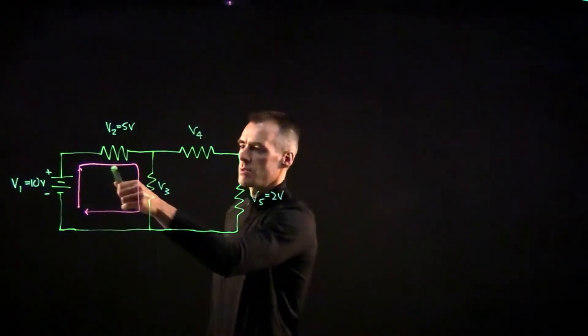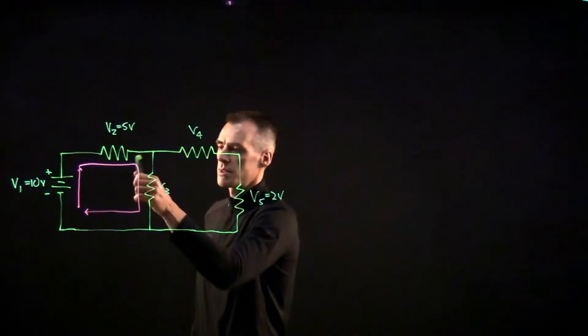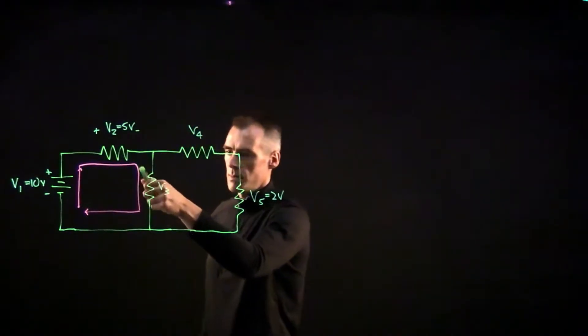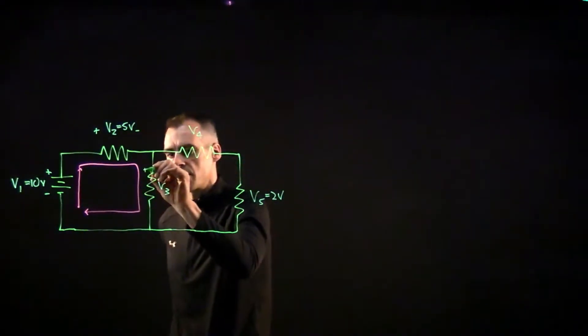And on this side it's going to be coming downward, so we've got a plus up here and minus over here. And as far as these outer ones, V4 and V5, we could imagine a different loop.